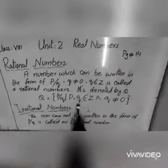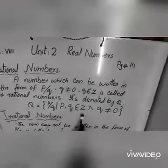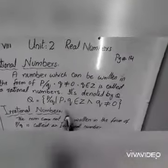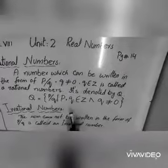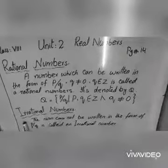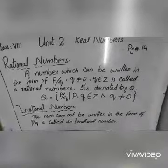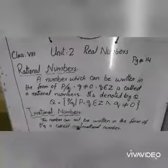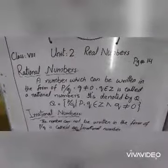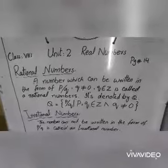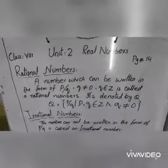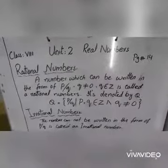P, Q belongs to Z — integers number hain jo negative aur positive dono hote hain — and Q is not equal to 0. Rational numbers repeating hote hain. Irrational numbers perfect square nahi hote, non-repeating hote hain, aur non-terminating hote hain.